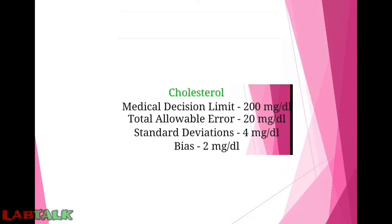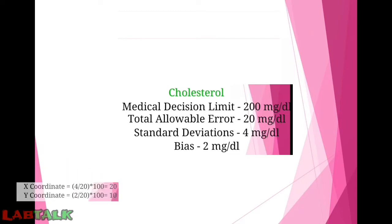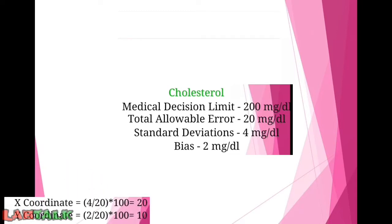Let us consider the cholesterol example, where the medical decision limit is 200 mg/dL, total allowable error is 20 mg/dL, standard deviation is 4 mg/dL, and bias is 2 mg/dL. As per this, the x-coordinate will be 20 and the y-coordinate will be 10, as calculated previously.